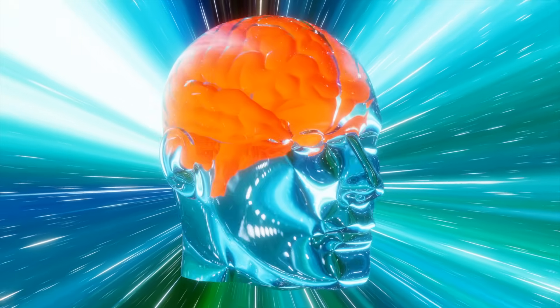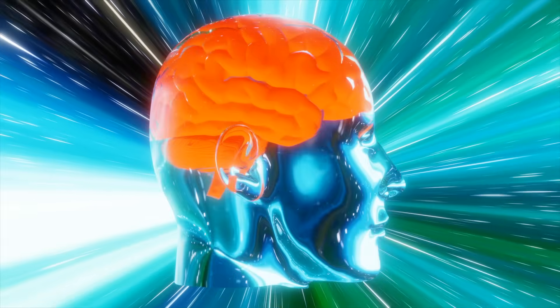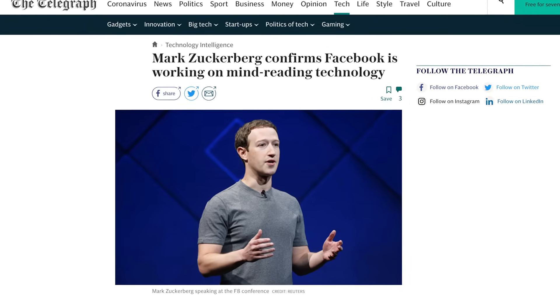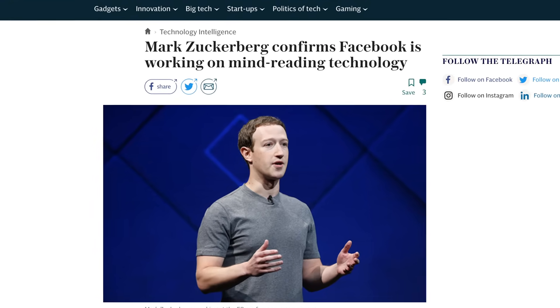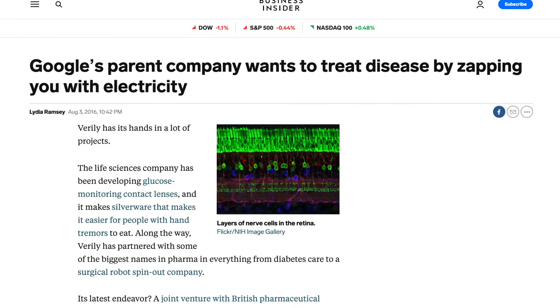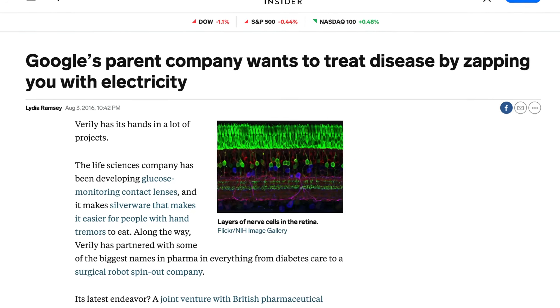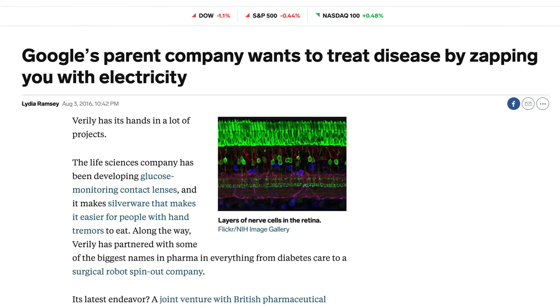Neuralink is just one of many companies thinking about brain-machine interfaces. Facebook is funding research on BMIs that will allow you to type with just your mind. Google's parent company, Alphabet, has a research organization that wants to treat diseases with an implantable device.